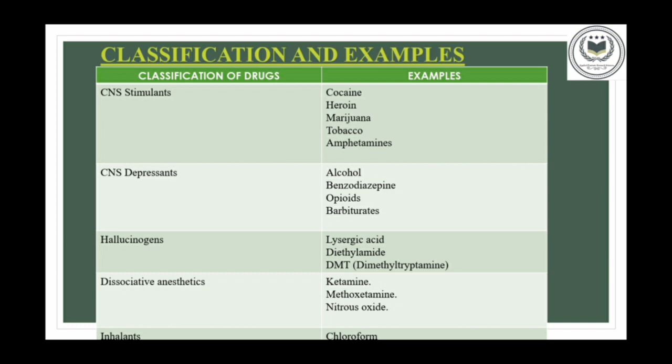Next come dissociative drugs. Dissociative drugs are also known as dissociative anesthetics. They are used for medical and anesthesia purposes, and they inhibit pain by cutting off or dissociating the brain's perception of pain. Some examples are ketamine, cold medicines, etc.